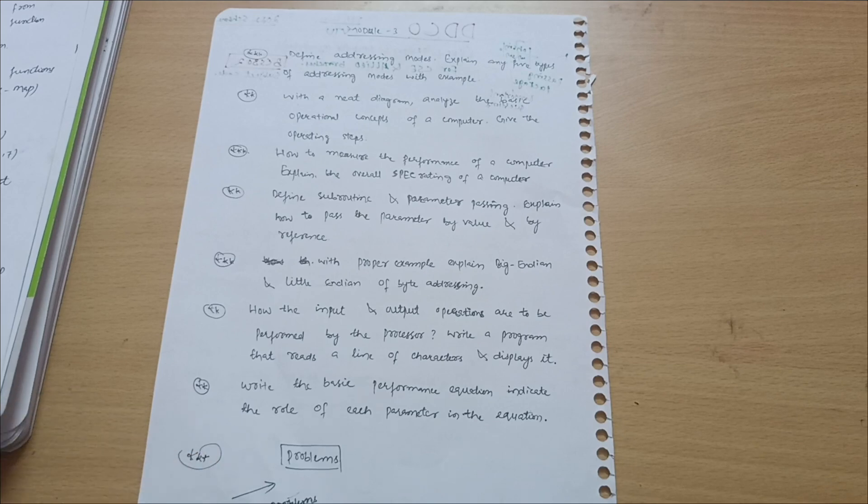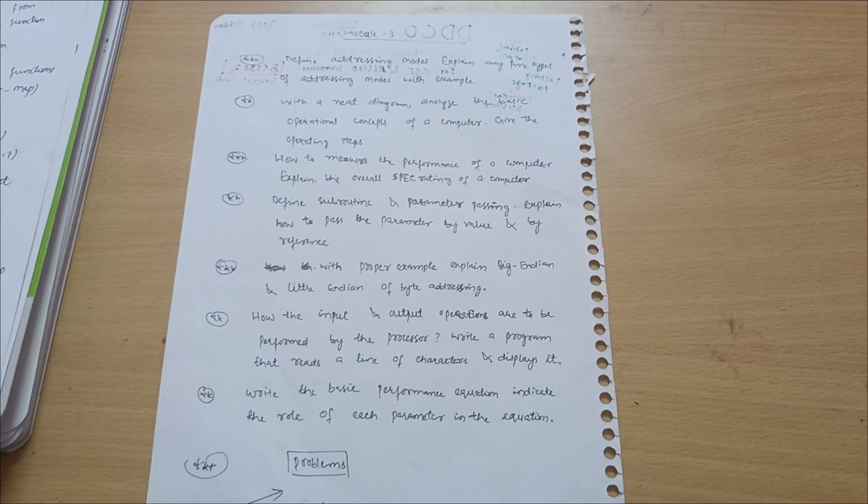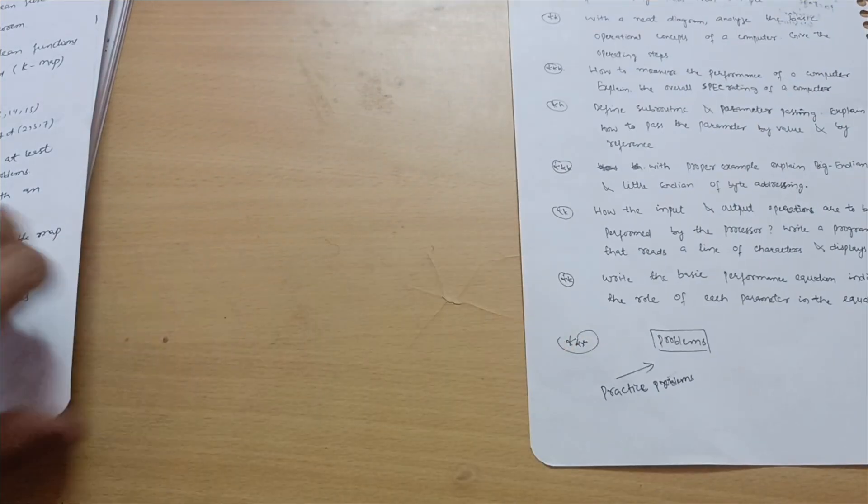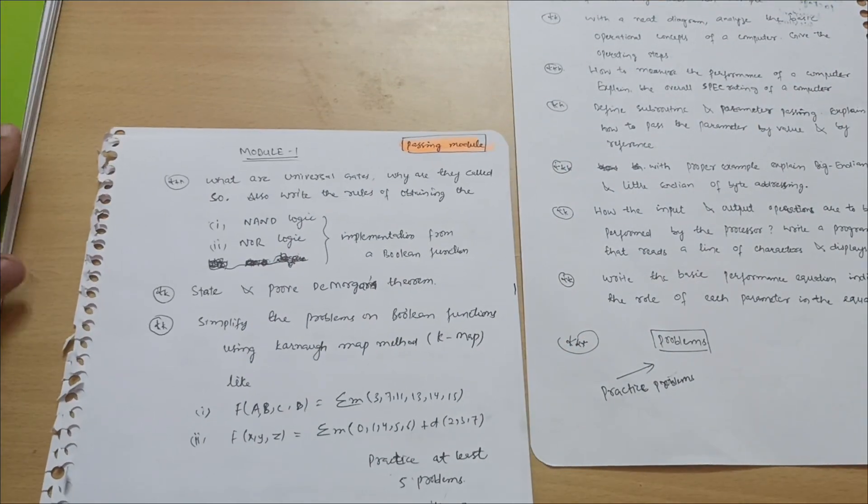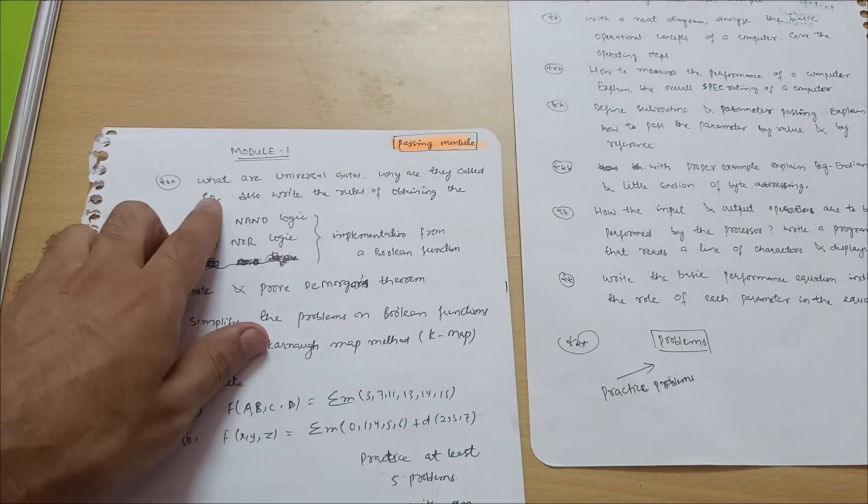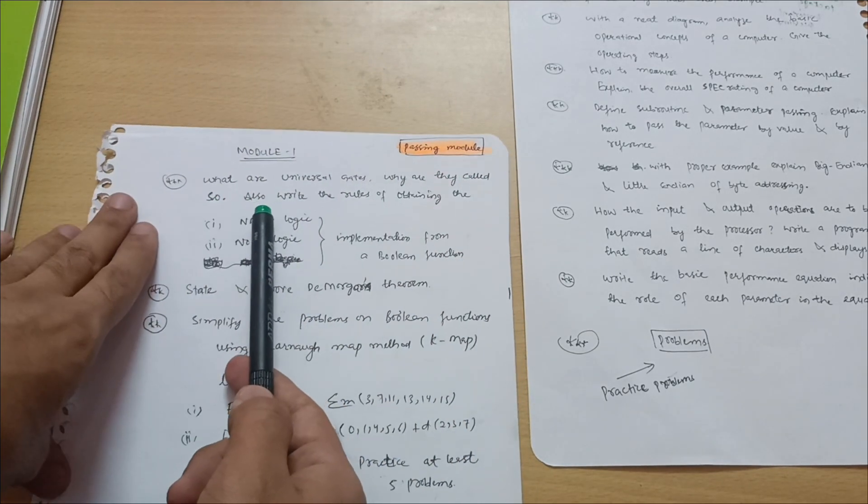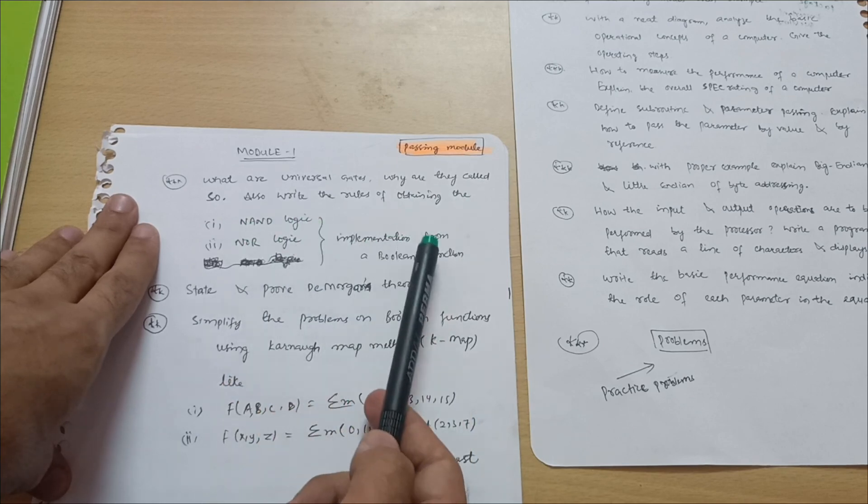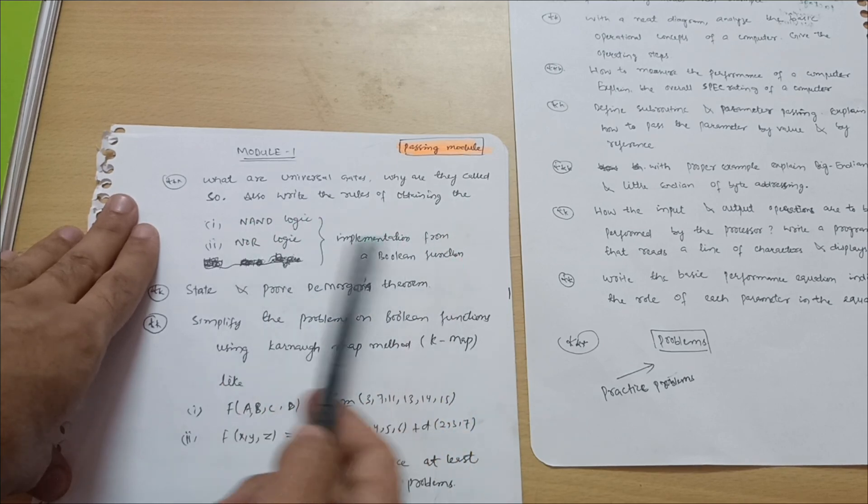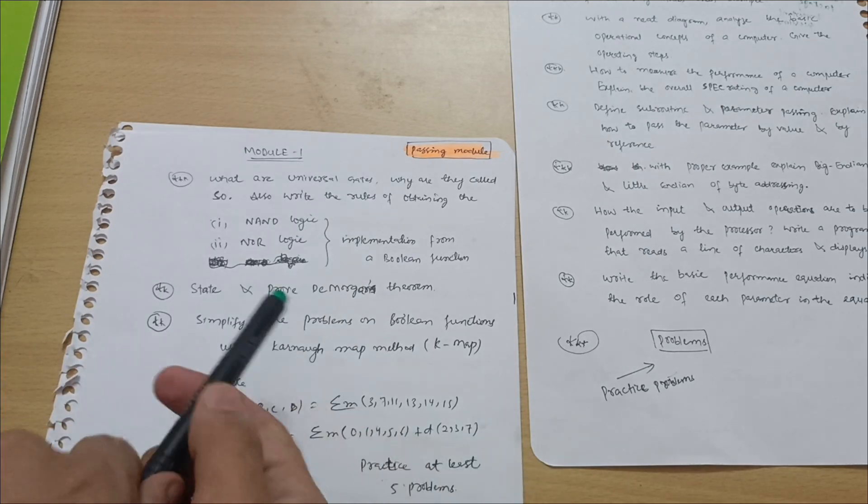Now I will discuss the passing modules. This is the passing module, that is first one. It is easier one so you have to go through these concepts: What are universal gates? Why are they called so? And also write the rules of obtaining the NAND logic, NOR logic implementation from a boolean function - most important one.